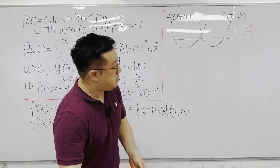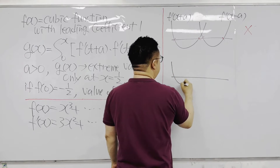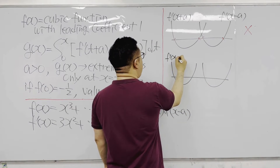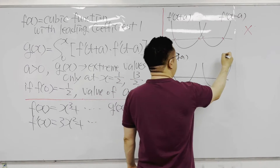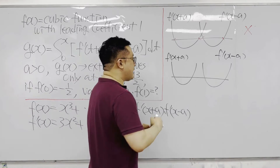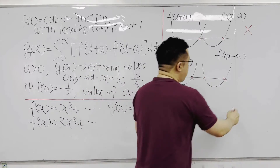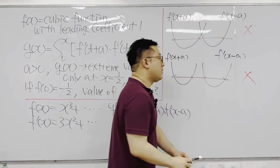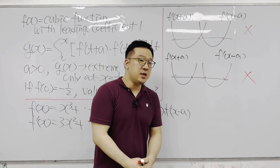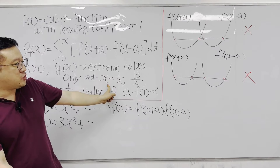The second case: g'(x) looks like this, with f'(x+a) and f'(x-a) again. Still we have four points of sign changes, so this is not the case we need either. Since g(x) should have only two points of sign changes so that it has extreme values only at x = 1/2 and 13/2, we need the last case.